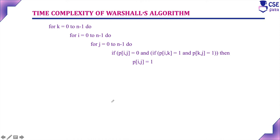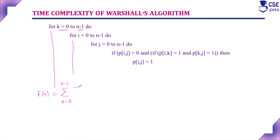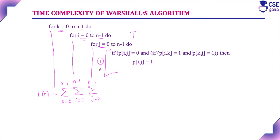Now considering the time complexity of Warshall's algorithm: this is the outer for loop. The time complexity f of n equals summation k from 0 to n minus 1. For the inner i for loop, summation i from 0 to n minus 1. For the innermost j for loop, summation j from 0 to n minus 1. When all three for loop conditions are true, the if statement executes once.